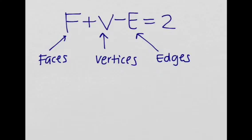So Euler's formula states that for a three-dimensional object, the number of faces plus the number of vertices minus the number of edges always is equal to 2. So F plus V minus E is equal to 2.